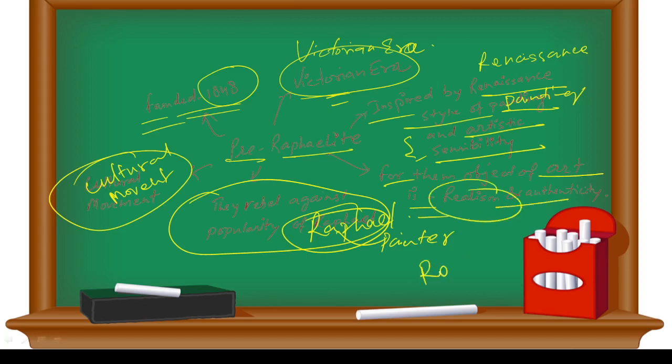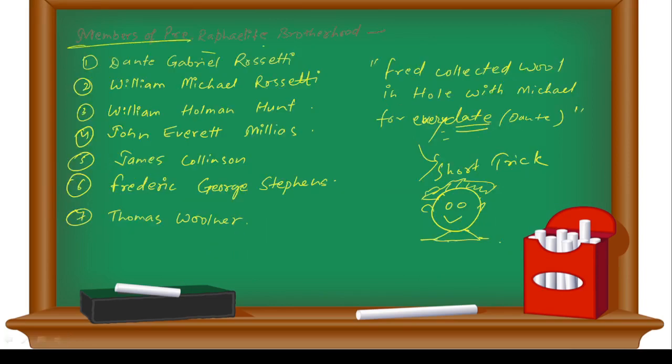Now let's come to the members of Pre-Raphaelite Brotherhood. Here I have written a short trick for you. First, let's go through the names: Dante Gabriel Rossetti, William Michael Rossetti, William Holman Hunt, John Everett Millais, James Collinson, Frederick George Stephens, and Thomas Woolner.